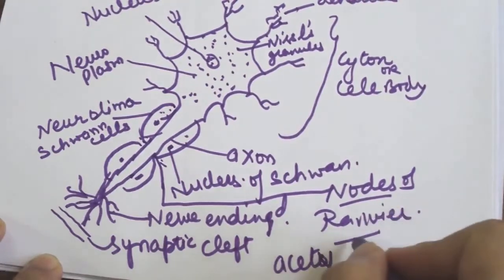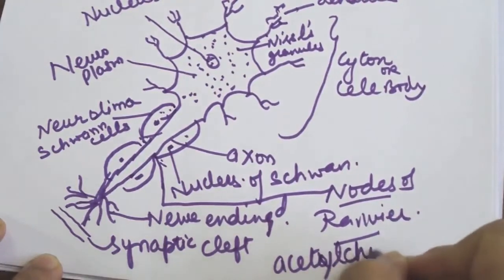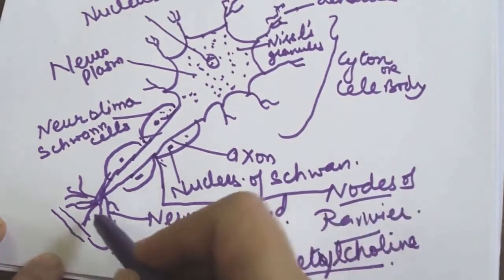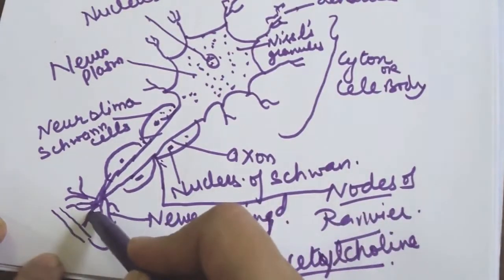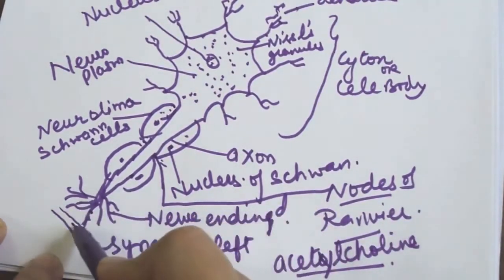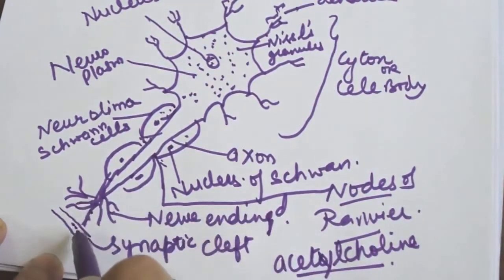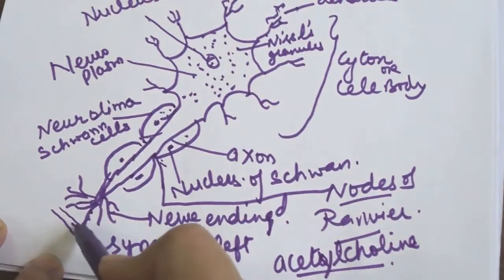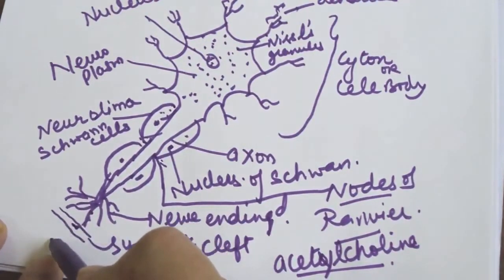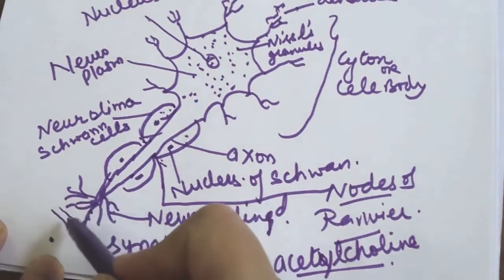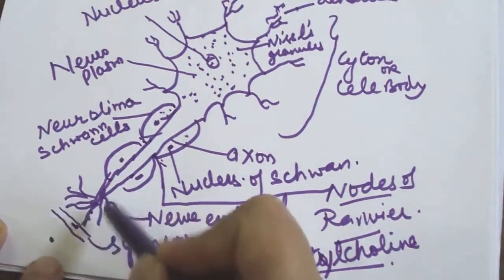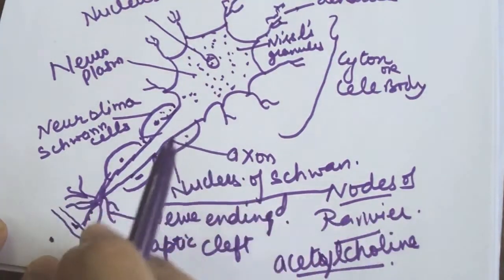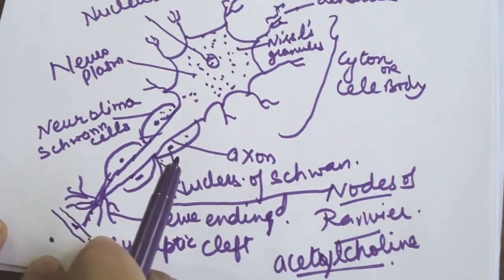In the synaptic cleft there is a chemical called acetylcholine. The message travels from the nerve ending through the synaptic cleft via acetylcholine into the dendrites of the next neuron. This entire area is called the synaptic zone.